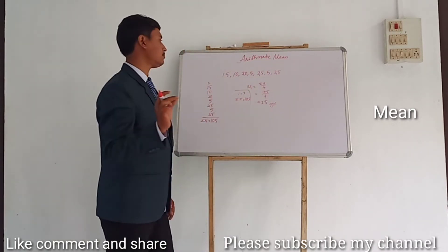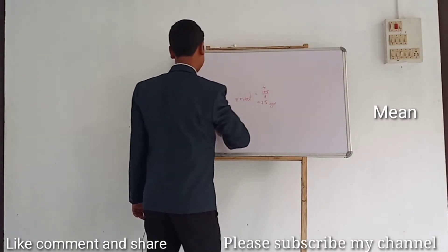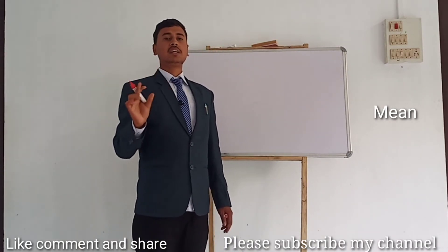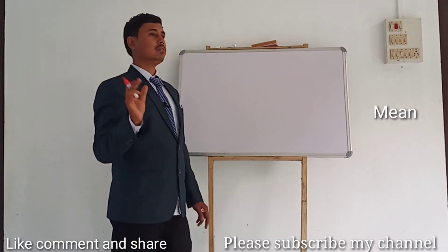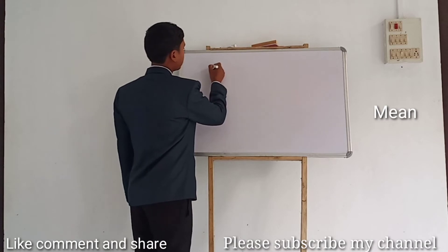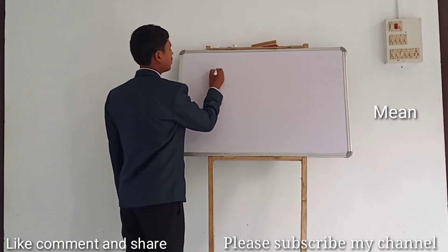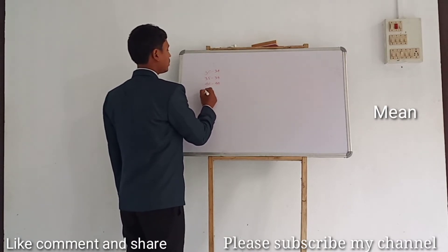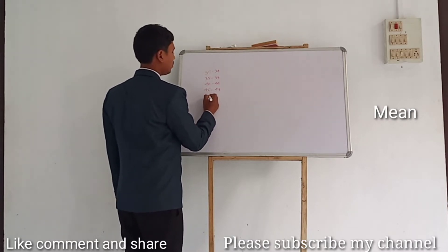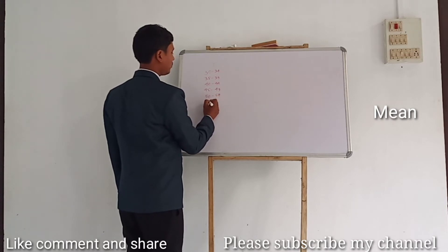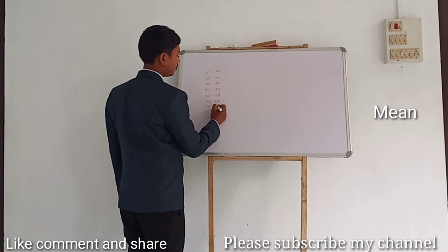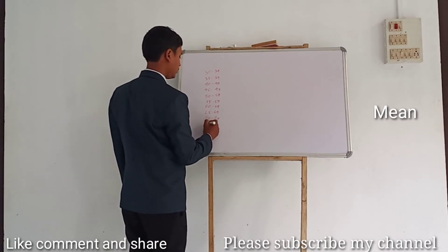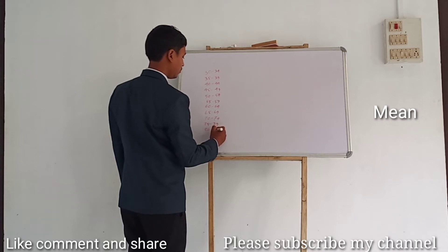Now, arithmetic mean for grouped data. The difference is: in ungrouped data, the numbers are not grouped into classes, whereas in grouped data, they are arranged in class intervals. The class intervals are: 30–34, 35–39, 40–44, 45–49, 50–54, 55–59, 60–64, 65–69, 70–74, 75–79, 80–84.